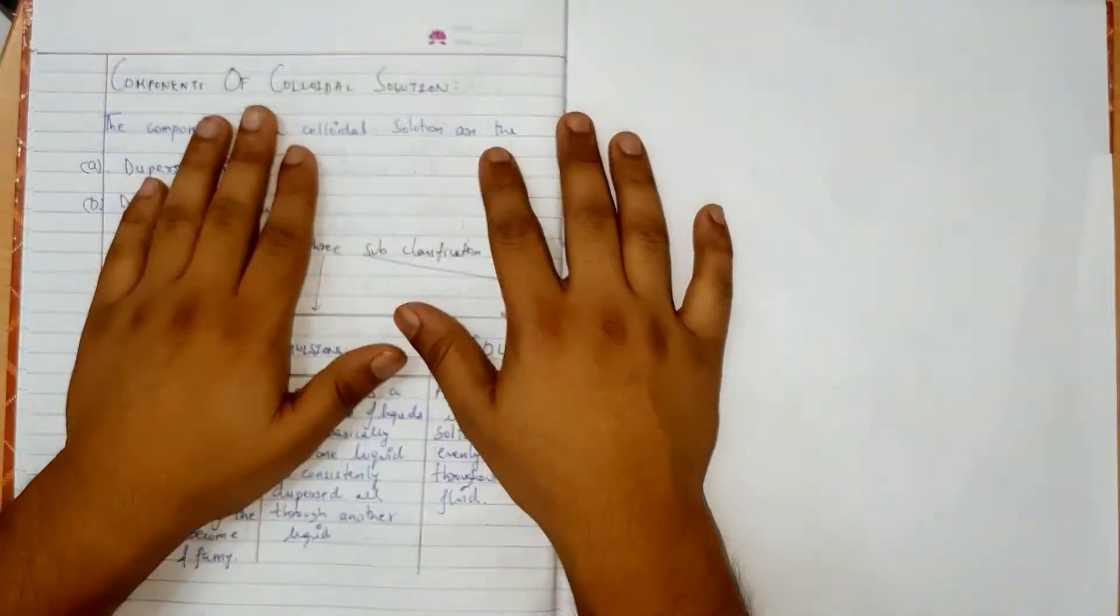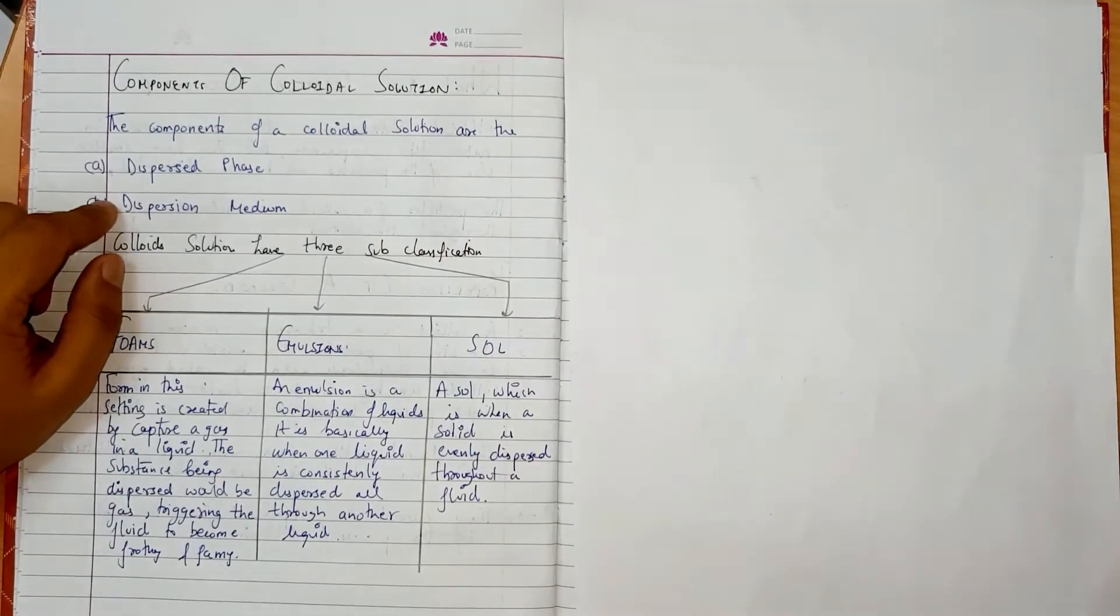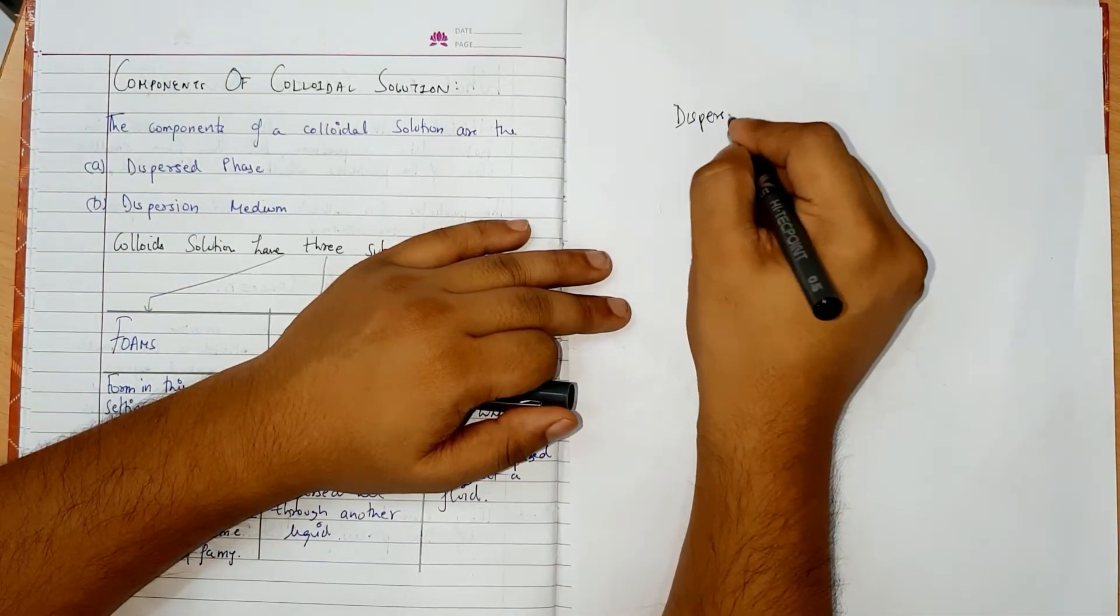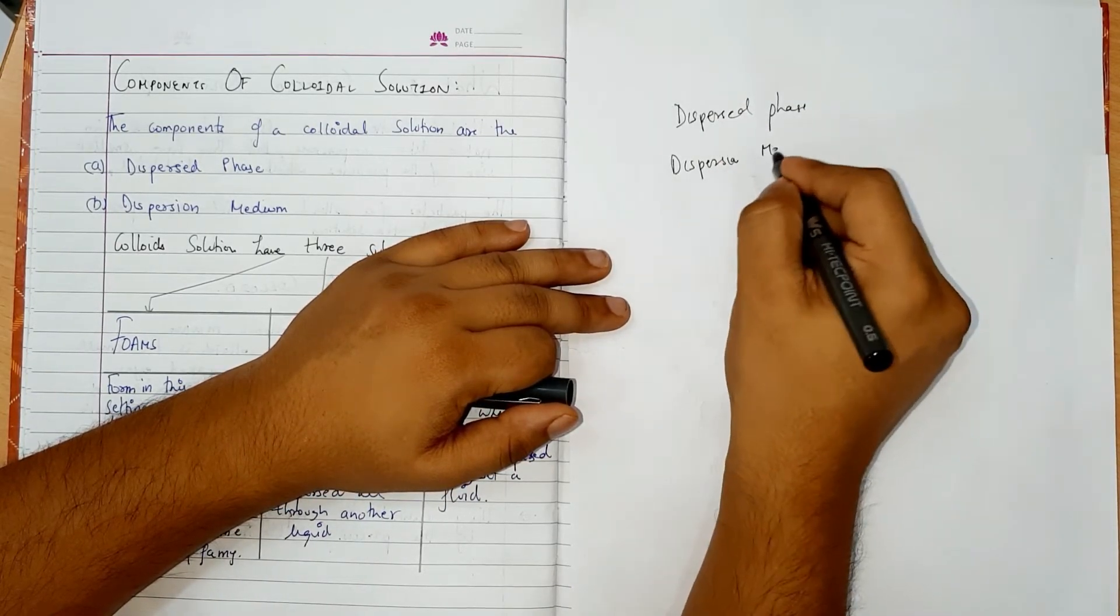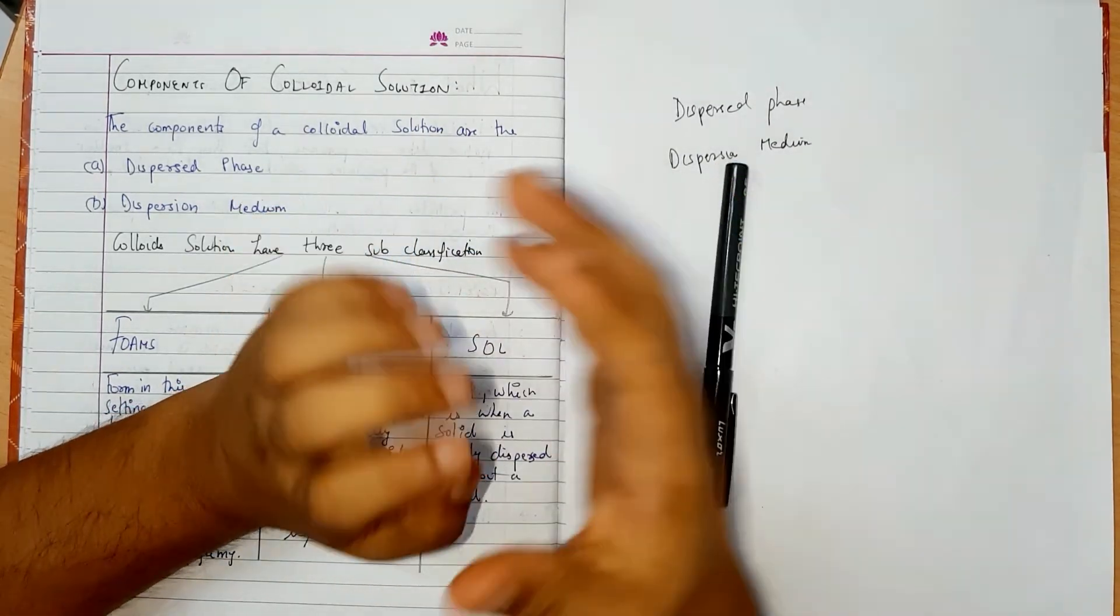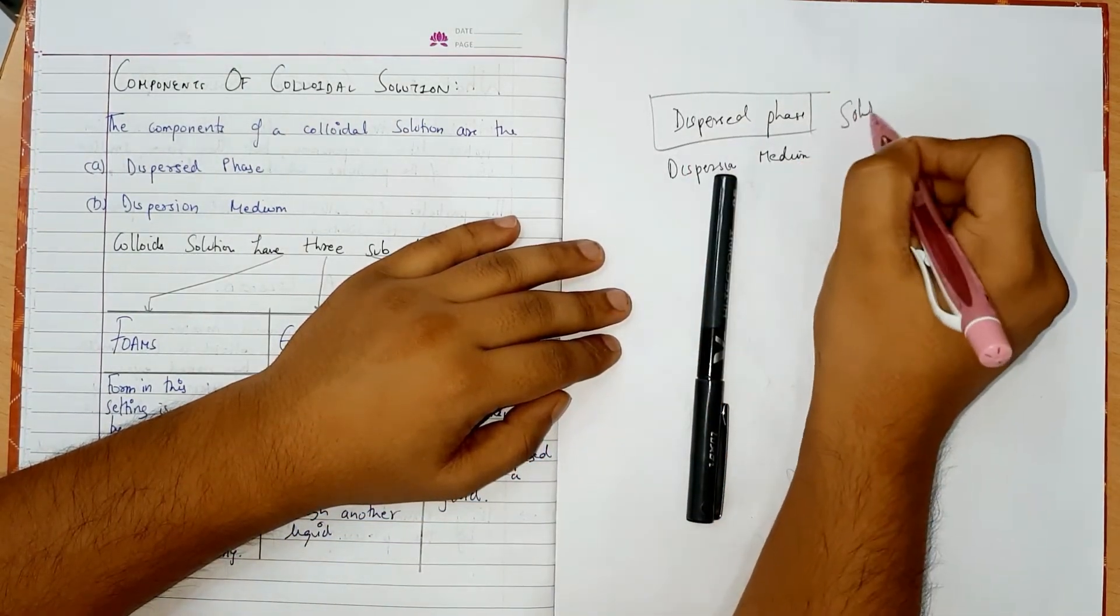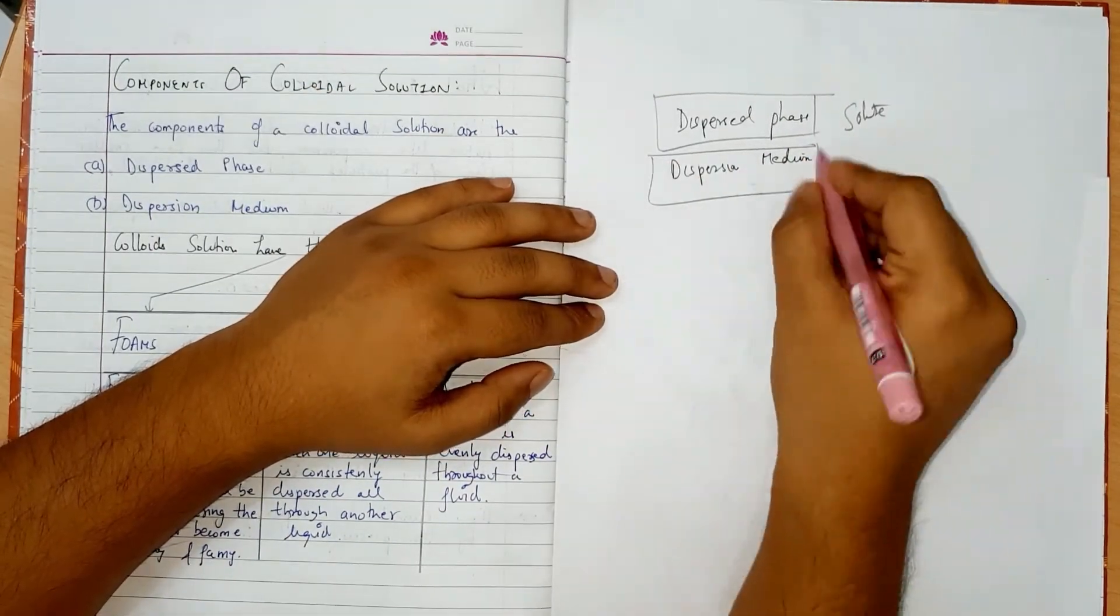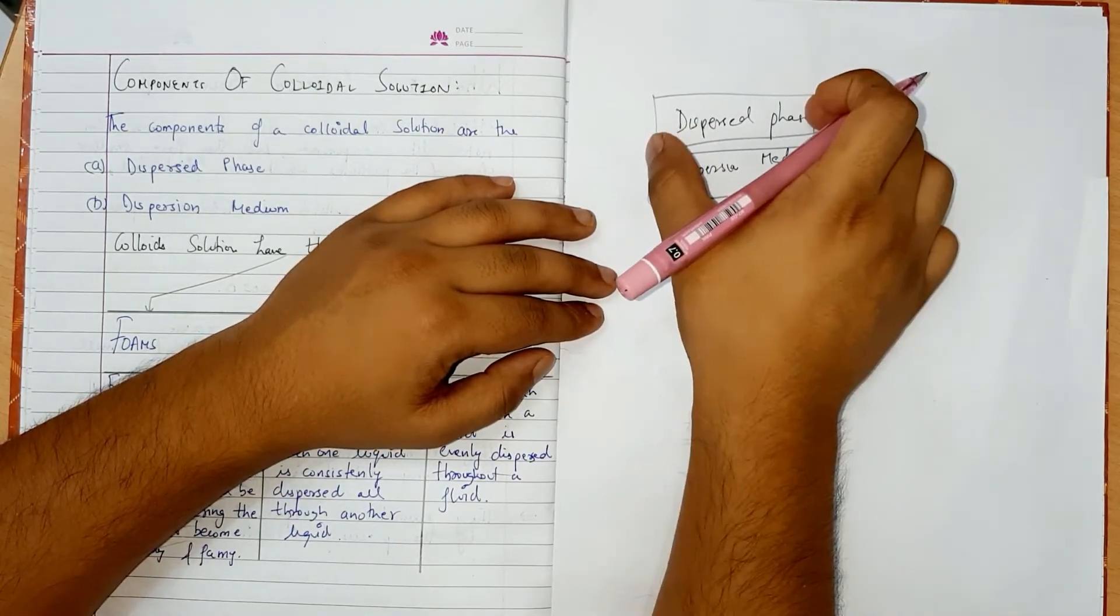Now we will learn constituent of colloidal solutions or we can say components. The components of colloidal solution are dispersed phase and dispersion medium. What we have said in true solution, the small quantity that is solute. In the same way, the phase will act as a solute, and dispersion medium will act as a solvent.